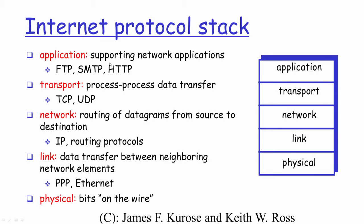The network layer has the clear responsibility of routing datagrams from the source system to the destination system, where the most commonly used protocol is IP — the internet protocol. Its primary responsibility is to determine the correct path to reach a particular destination, and whenever a packet arrives with a specific destination IP address, to determine the path through which that packet must be sent to reach that destination.